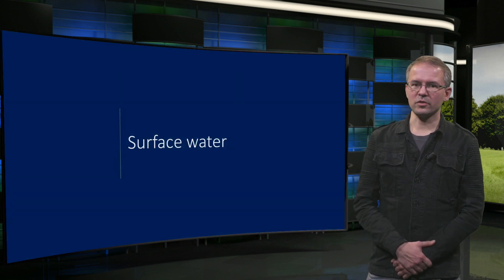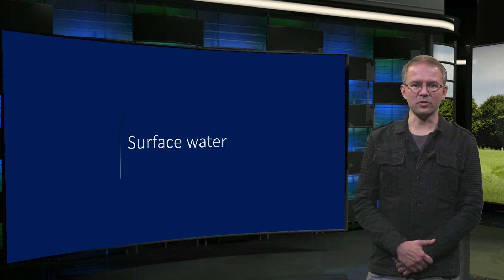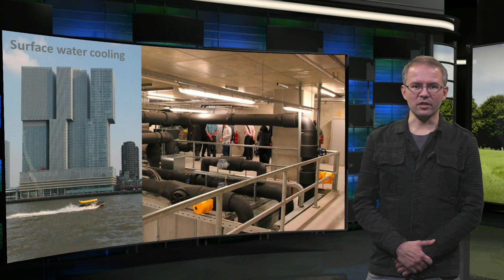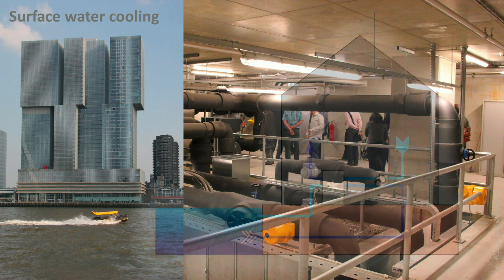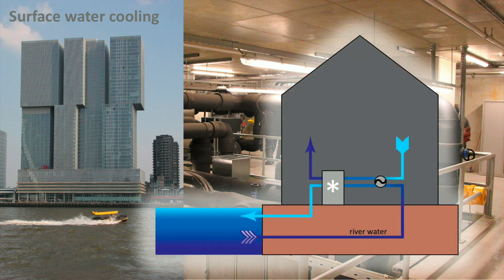The second source I will be showing is surface water. Lakes, rivers and the sea can all be used for heating or cooling. An example that combines several technologies is the Rotterdam building, which uses the Maas river for cooling. Here, river water is pumped through the cooling plant in the building and either used with just a heat exchanger, or if needed, cooled down further with a heat pump. The same principle can be used for heating — for example with seawater, which is relatively warm in winter — however, a heat pump is then necessary.